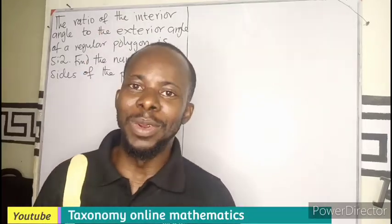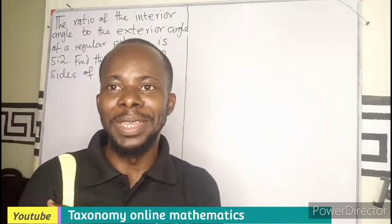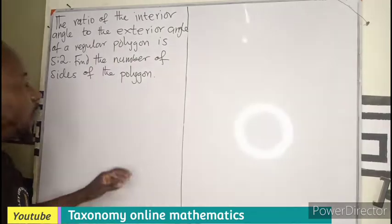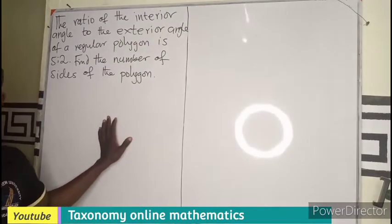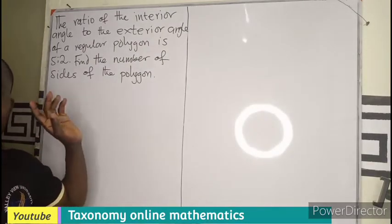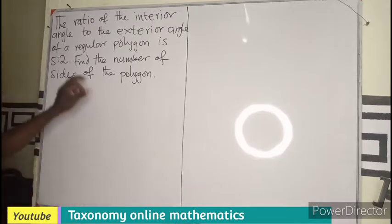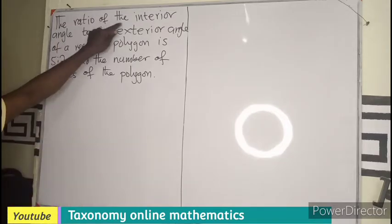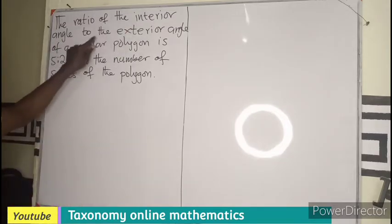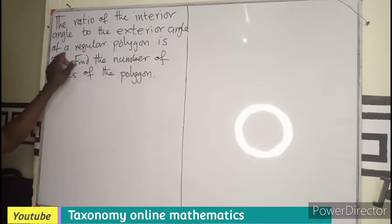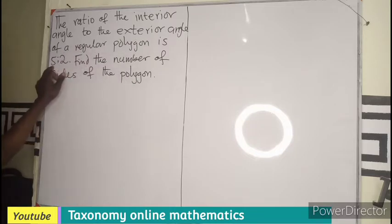Welcome to Tazunomi Online Mathematics. Let's provide an answer to this question on polygons and plane geometry. The ratio of the interior angle to the exterior angle of a polygon is given as 5 is to 2.